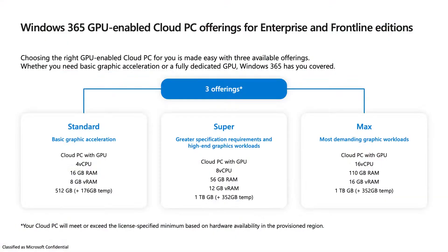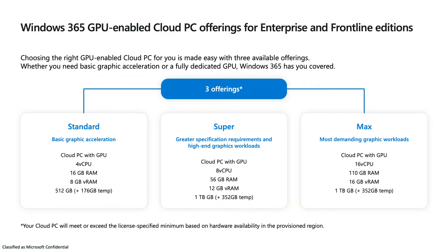Thanks, Christian. So if you look at the slide, GPU-enabled Cloud PC — we're offering two offerings, one for the enterprise and one for the frontline edition. The three SKUs we're offering today: the Standard SKUs are for users that want basic graphic acceleration. The GPU Super has greater specifications for customers that want high-level graphics workloads. And the third option is Max — for customers with the most demanding graphics workloads, doing intensive work on their PC.